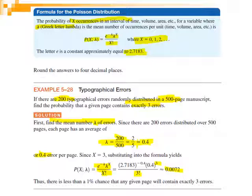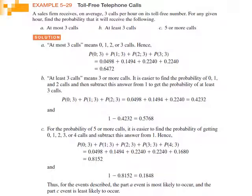Thus, there is less than one percent chance that any given page will contain exactly three errors. Note that the Poisson distribution describes a real event. Let's take another example.